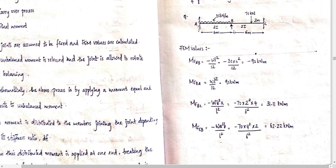M of BC uses the formula W times B squared times A divided by L squared. The point load is 70 kN, with distance A equal to 2 meters and distance B equal to 4 meters, over a 6-meter span. M of CB uses the formula minus W times A squared times B divided by L squared, giving minus 70 times 4 squared times 2 divided by 6 squared.